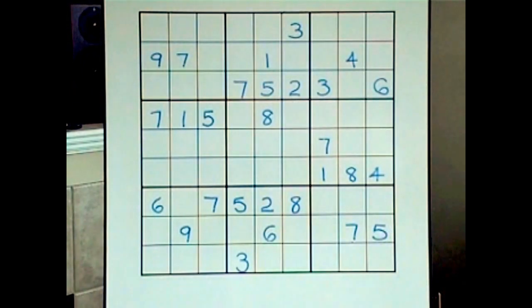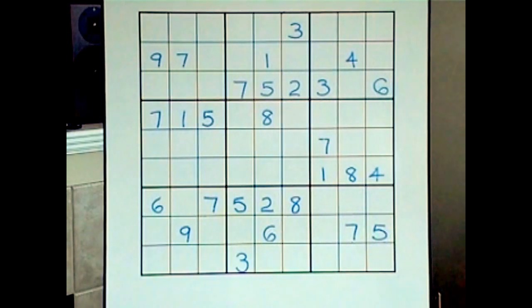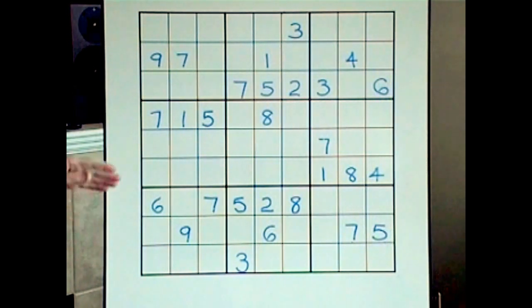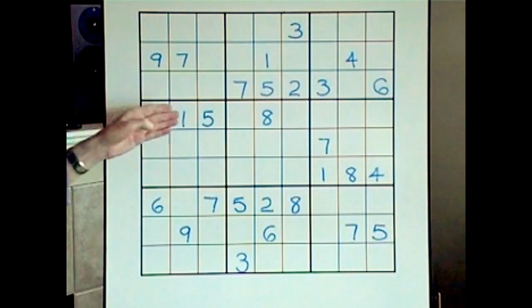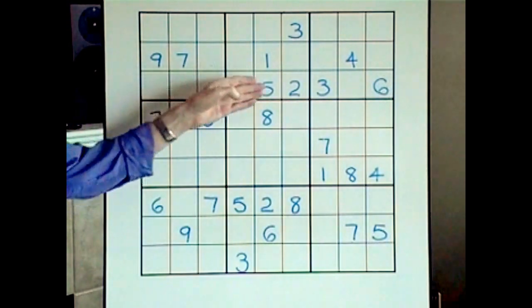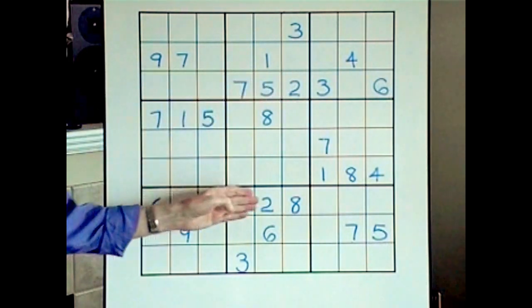Hello everyone, this is Robin the Sudoku guy with session 12. When I first look at this, I don't see anything that quickly stands out other than the fact that we have several rows that are all filled in, which we need to be aware of.